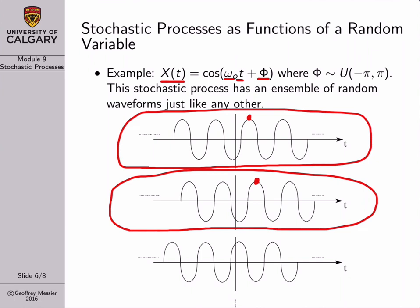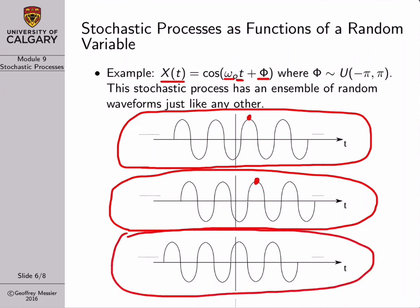The third realization of the stochastic process would have yet another different phase. The reason we like to describe a stochastic process as a function of a random variable, when possible, is that it really lends itself to analysis. The variation with time is a deterministic relationship — it comes from the cosine function — while only the phase is random.